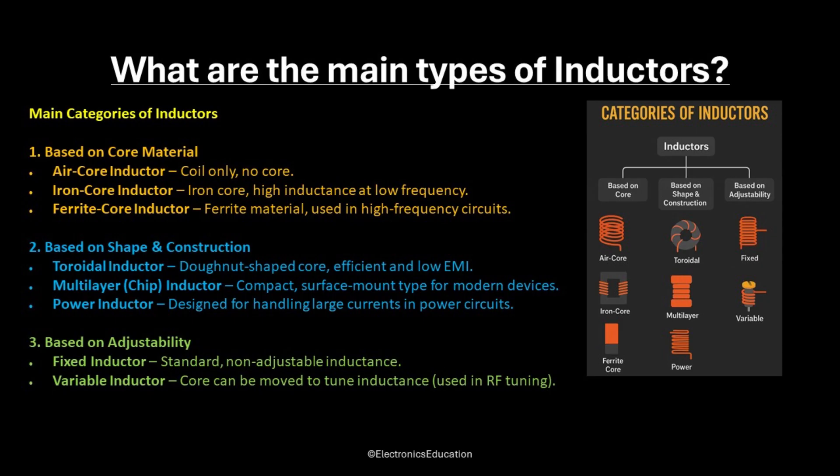Now let us discuss the types of inductors. There are three main categories. 1. Based on core material, inductors can be classified as air core, iron core, and ferrite core. Air core inductors have only coils and no core. Iron core inductors have an iron core and have high inductance at low frequencies. Ferrite core inductors use ferrite material as core and are used in high-frequency circuits. 2. Based on construction, inductors are classified as toroidal inductor, multi-layer or chip inductor, and power inductor.